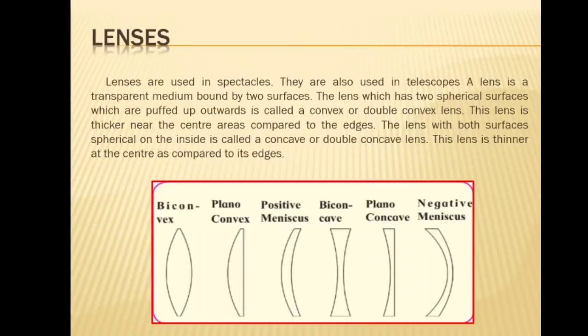Some examples are the lenses used by old persons for reading, lenses embedded in the front of the door, and the lens which the watchmaker attaches to his eye. Lenses are used in spectacles and in telescopes, as you have learnt in the previous class.